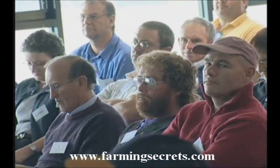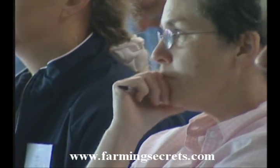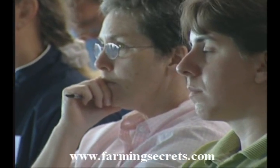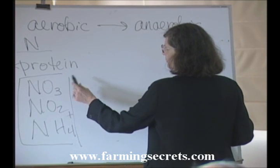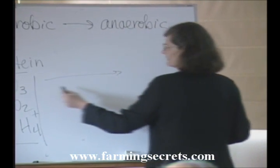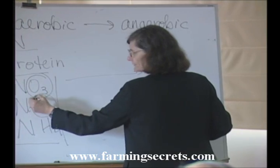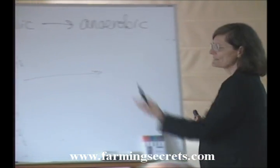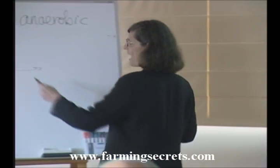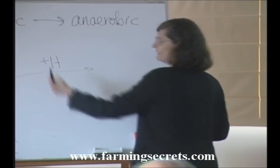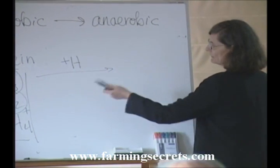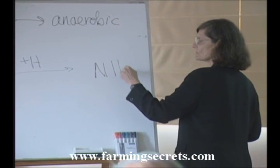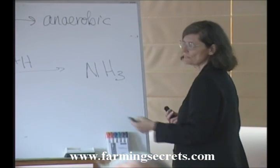What happens to these aerobic forms of nitrogen when we go anaerobic? Let's think about any of the inorganic forms of nitrogen here. When we go anaerobic, we're going to rip the oxygens off. Those anaerobes need that oxygen as the final step in the electron transfer chain. We're going to rip oxygen off and put back hydrogen — suck up hydrogen as we go anaerobic — and we're going to end up with NH3. This is ammonia.